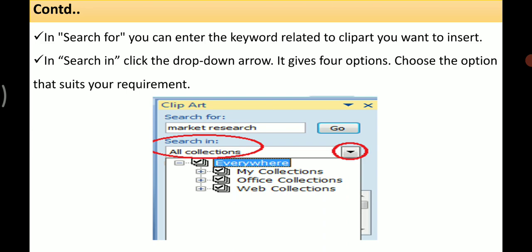In the Search In field, click the drop-down arrow, which gives four options: Everywhere, My Collections, Office Collections, and Web Collections. Choose the option that suits your requirement.